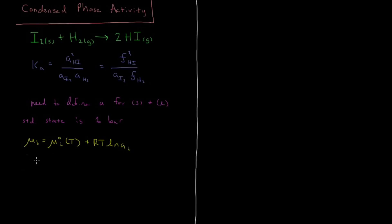Let's remind ourselves that the chemical potential, being just a molar Gibbs energy, has its partial derivative with respect to pressure at constant temperature equal to the molar volume. This follows from the fact that the partial derivative of Gibbs energy with respect to pressure is volume, and since chemical potential is just molar Gibbs energy, you get the molar volume for that derivative.